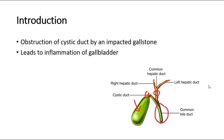In acute calculus cholecystitis, there is impaction of the gallstone at the cystic duct or at the neck of the gallbladder, which causes inflammation of the gallbladder. When there is obstruction of the biliary flow, the bile cannot flow out, and the gallbladder becomes distended and inflammation occurs. This is what we call cholecystitis.